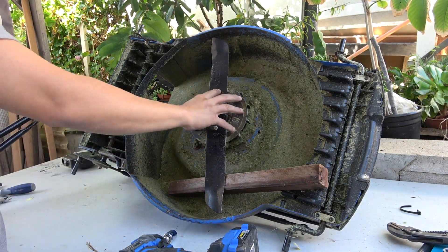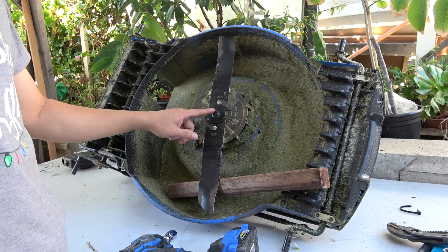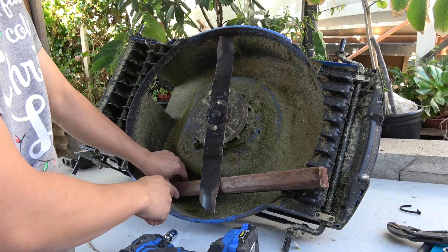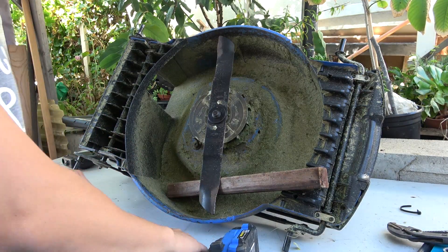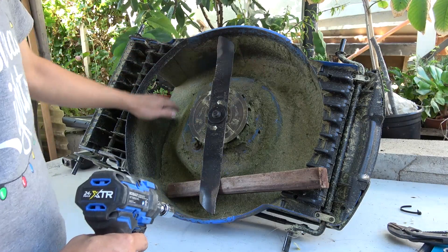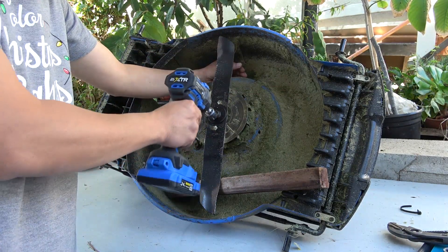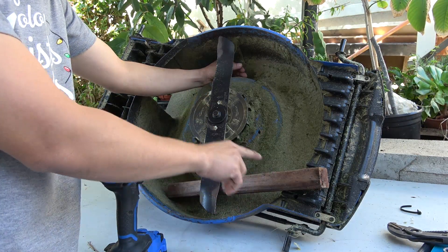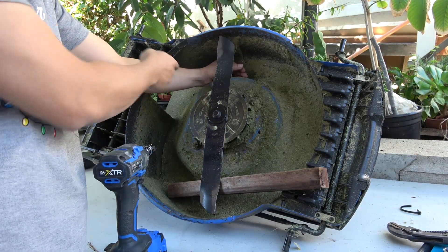Next step is to remove the blades. We've got a 15 millimeter bolt here and I've got a piece of wood here on the bottom to stop the blade from spinning. And while you're doing this keep your hands away from this area. You put your hands here while you're trying to remove the bolt, if this slips out and the blade spins you'll cut your hands in half.